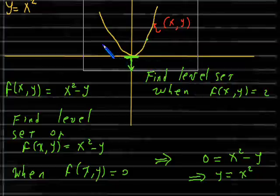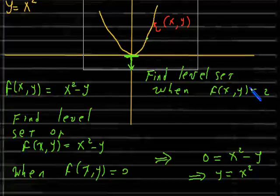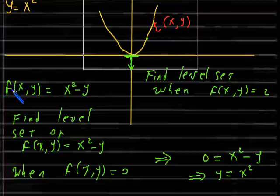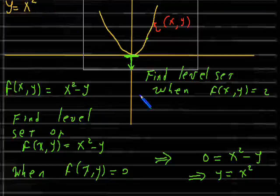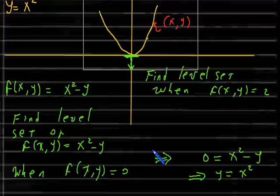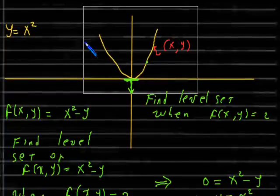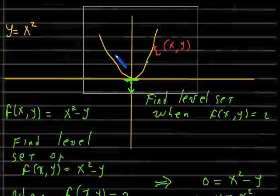Now what we do is introduce a new function f(x, y). We introduce a new variable y and define f(x, y) = x² − y. I took the y and moved it over, making this x² − y. Now if I look for the level set when f(x, y) = 0, I end up with a level set whose graph looks exactly like this.